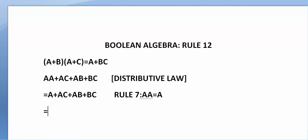Now we have to simplify further. In the first two terms A and A·C, we take A as a common factor according to factoring in the distributive law. So it becomes A·(1 or C), and all other terms remain the same: A·B and B·C.